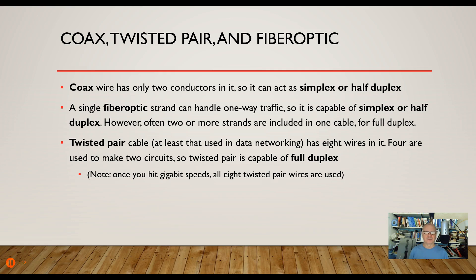Twisted pair can always give you full duplex. It has eight wires in it — two wires for a circuit in one direction, two wires for a circuit in the other direction, using four wires total. We typically only use four of the eight wires, though parenthetically, once you hit gigabit speeds, we tend to send two at a time in each direction for faster throughput. So twisted pair, we can always get full duplex out of that.